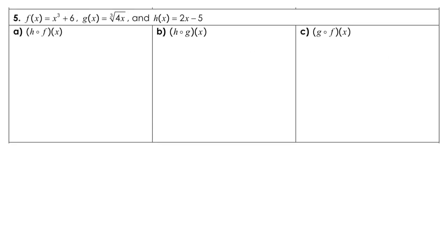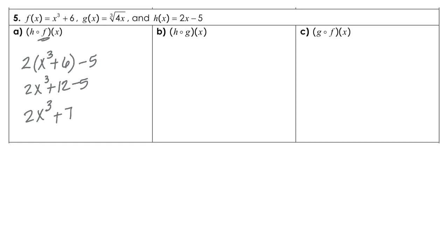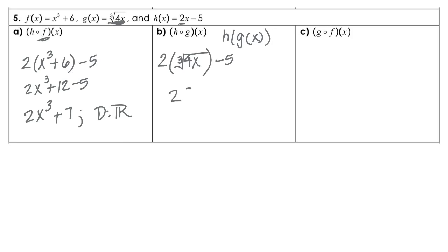For number 5, we are finding h of f of x. We're plugging in function f into function h, so we're going to have 2 times x cubed plus 6, and then minus 5, giving us 2x cubed plus 12 minus 5, which is 2x cubed plus 7. The domain here will be all real numbers. For h of g of x, h is going to be 2x, but instead of x I'm going to put function g, and then minus 5. That's about as far as we can go — there are no like terms, and since it is an odd root — a cube root — the domain will be all real numbers.